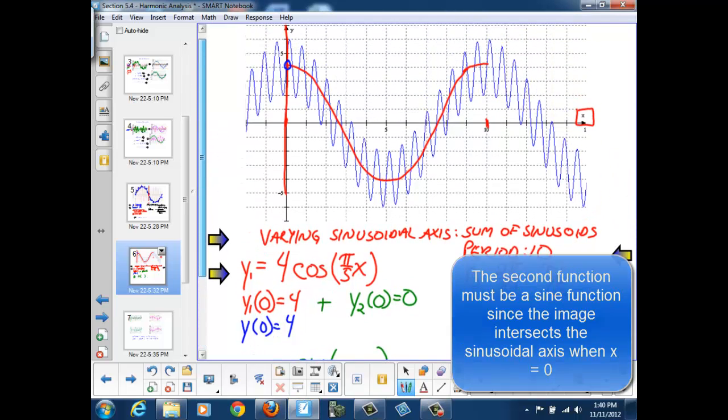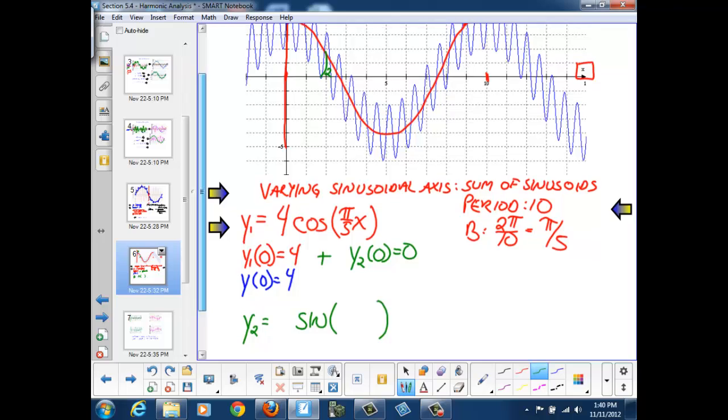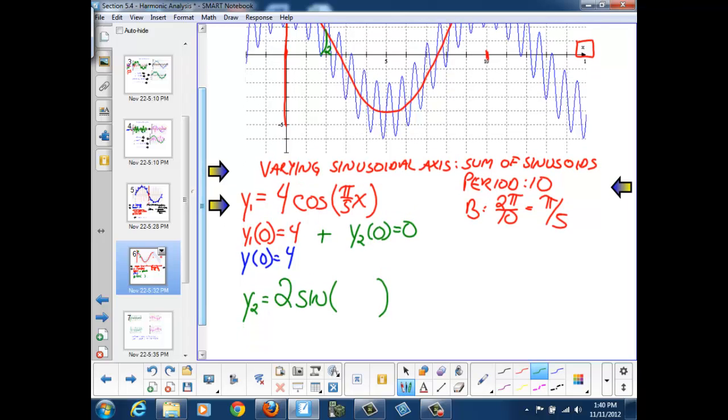So I know that y2 is going to be a sine function with some period and some amplitude. Let's go back to the graph. And here, we see that we're bouncing up and down around that red line, or red curve, by a value of approximately 2 units.